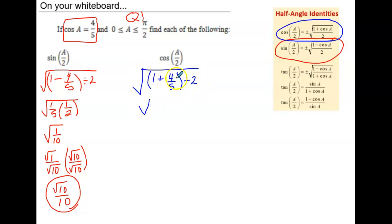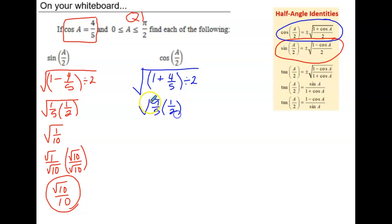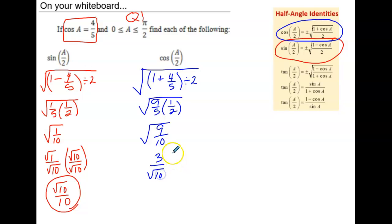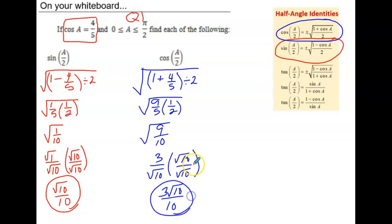Then we add 1 plus 4 fifths, which is 5 over 5 plus 4 over 5, for a total of 9 over 5. Dividing by 2 is the same as multiplying by the reciprocal, 1 half. That gives us the square root of 9 tenths, which is 3 in the numerator and root 10 in the denominator. We rationalize the denominator by multiplying by root 10 over root 10, for a total of 3 root 10 over 10. And that would be the cosine of the half angle.